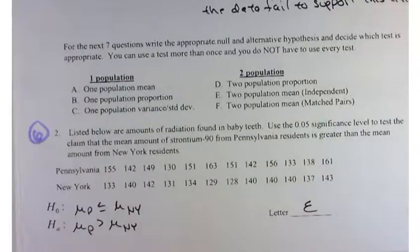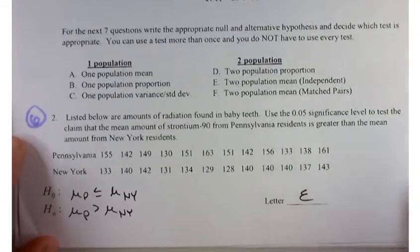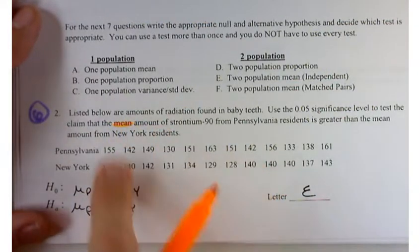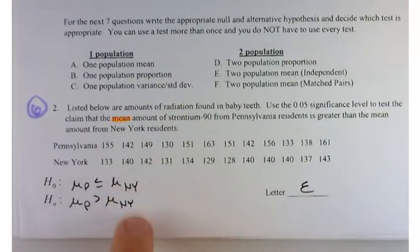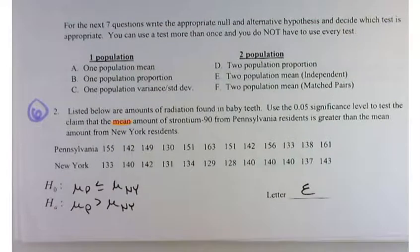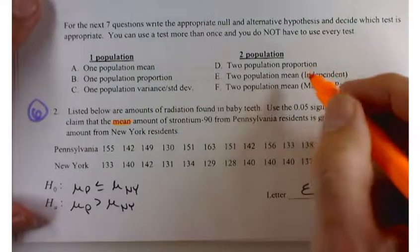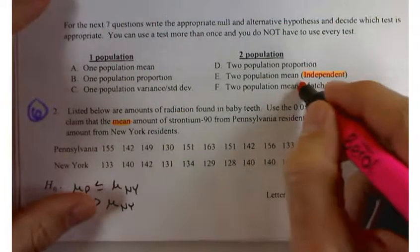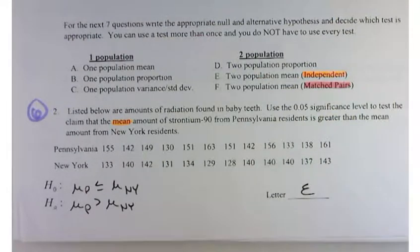Back to the amount of radiation in teeth. This time, we're testing the mean amount. If you're testing a mean amount for two different data sets or two different populations, then it's something like this. The only thing you have to decide is, are these independent or matched pairs?